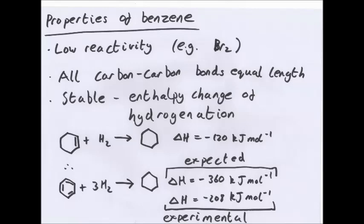So if you had 3 carbon double bonds plus 3 H2, you would expect to be minus 360 kJ per mole. The experimental enthalpy change of hydrogenation of benzene is minus 208. We'll explain why that is important later.